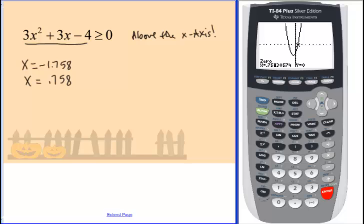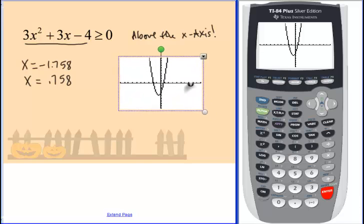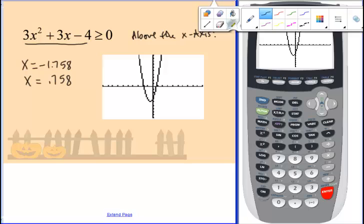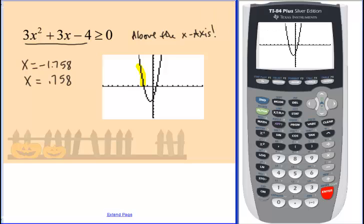So what we're interested in here on this graph is all the points on the graph where we are larger than zero. In other words, the point on the graph where we are above the x-axis. Well, that's this point right here. And that's this point right here. Because we want to know where all of this part is true. Where are we above the x-axis?